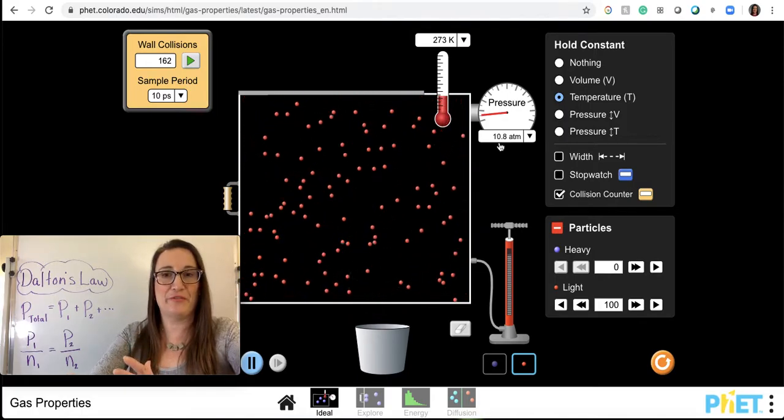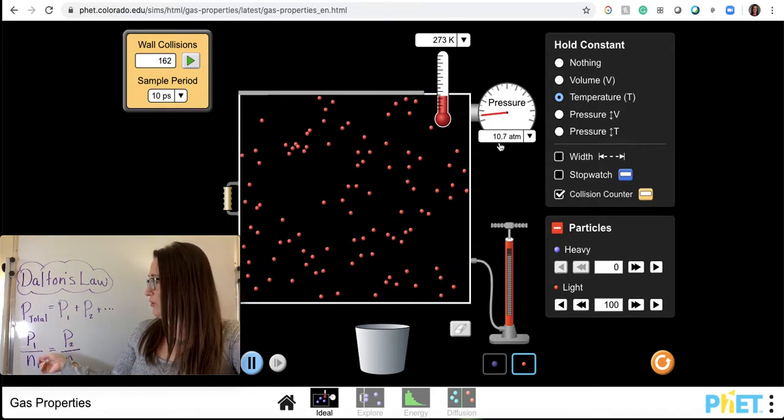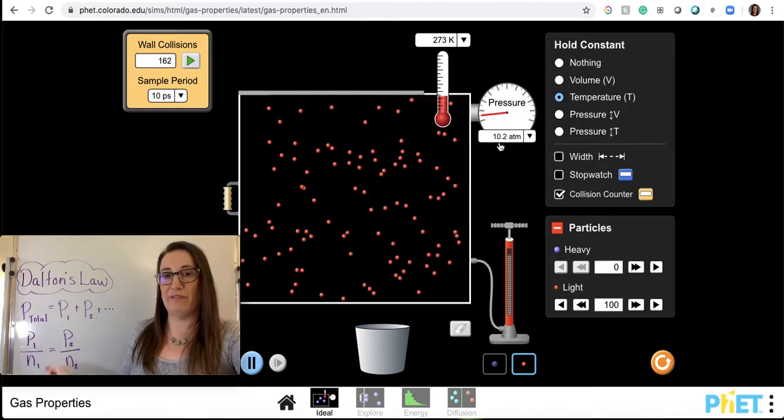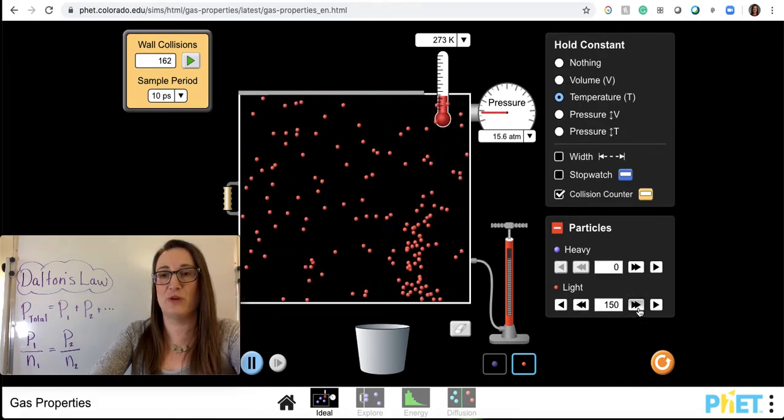Remember, it was around 5. So that's this first version of Dalton's Law, which is that if I have more moles, I'll have more pressure. If I have less moles, I have less pressure. Let's do one more. Let's go up to 200.